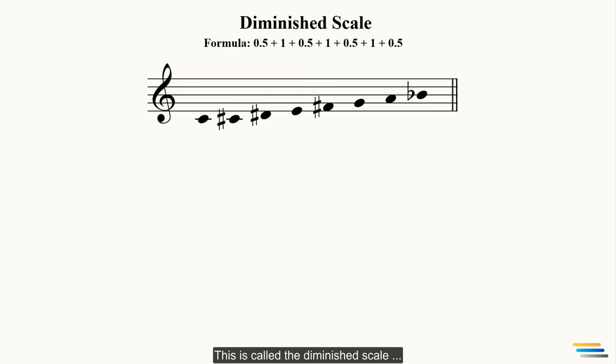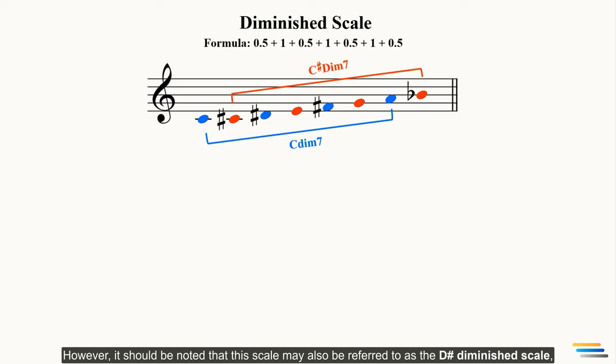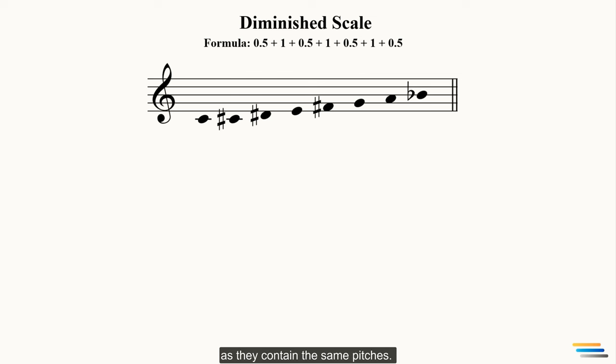This is called a diminished scale since this scale is the combination of two different diminished 7th chords. For example, C diminished 7th and C sharp diminished 7th chords make the C diminished scale. However, it should be noted that this scale may also be referred to as the D sharp diminished scale, as they contain the same notes.